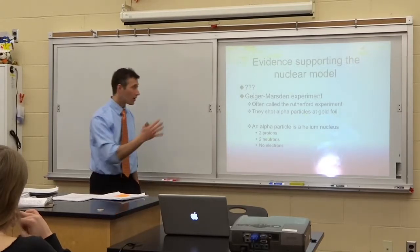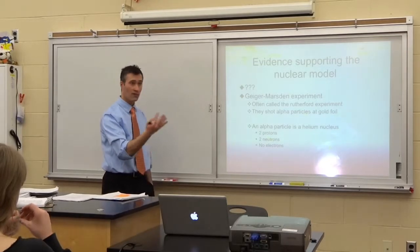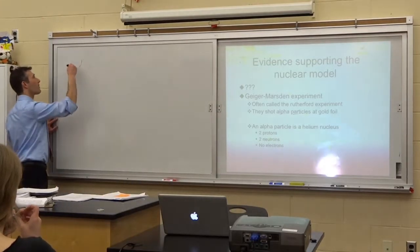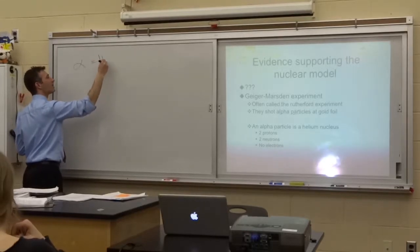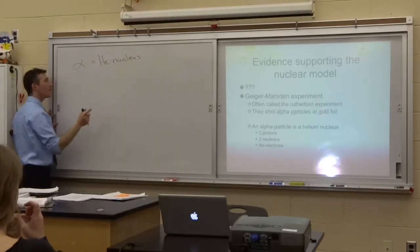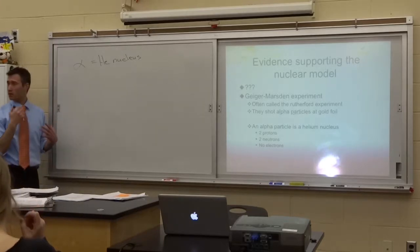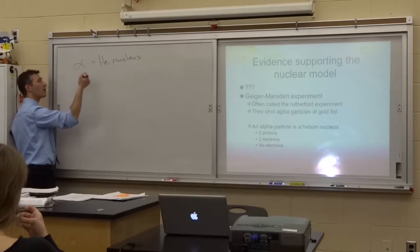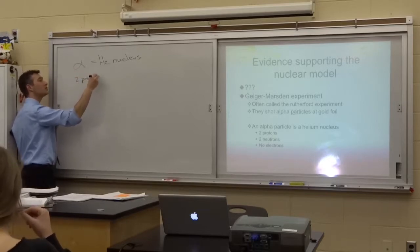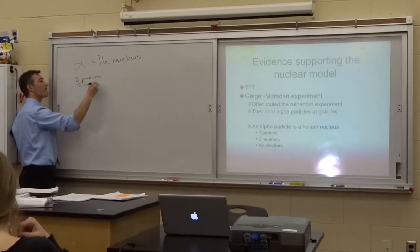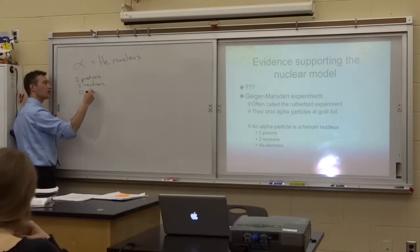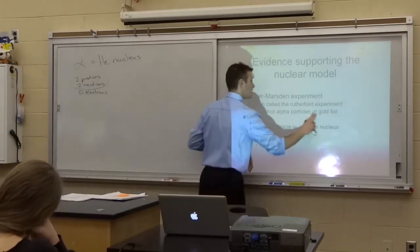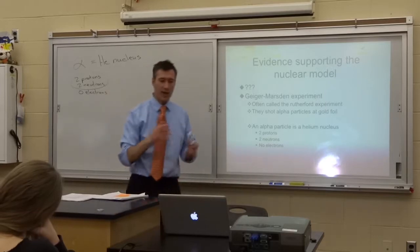So the Geiger-Marsden experiment is the same thing as the Rutherford gold foil experiment. And it's correctly named. These guys shot stuff at gold foil. They shot alpha particles at gold foil. Now, we've run into alpha particles before. So an alpha particle is the same thing as a helium nucleus. So the alpha particle is tiny. Helium is one of the smallest atoms, and it's the nucleus of one of the smallest atoms. So it's tiny, and it is charged. Because this alpha particle, this helium nucleus, is two protons and two neutrons, and then no electrons. It's just a nucleus. No electrons at all. So two protons, two neutrons. So it is positively charged.